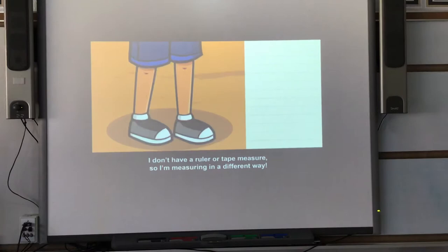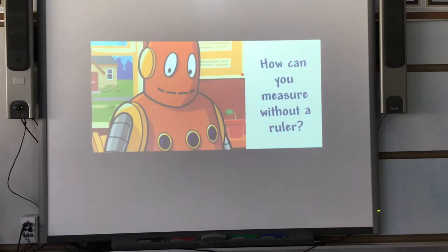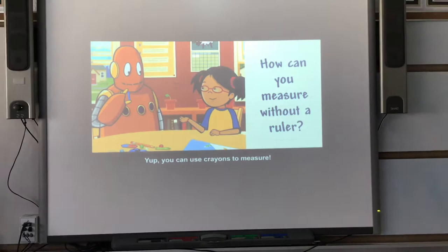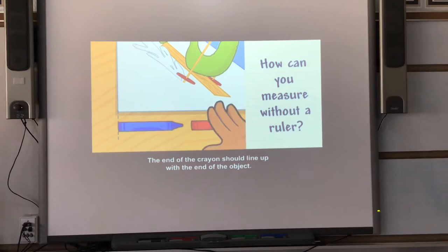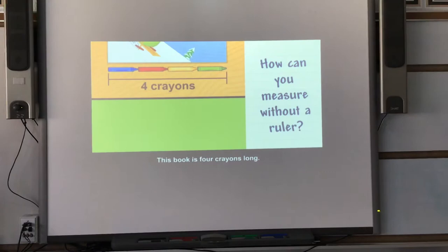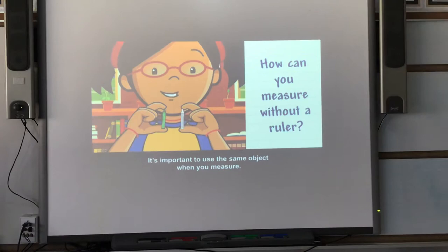How can you measure without a ruler? You can use objects around you to measure things. You can use crayons to measure — line up crayons along the object you want to measure. Make sure the crayons are straight and the same size. There shouldn't be gaps between them and they shouldn't overlap. The end of the crayon should line up with the end of the object. This book is four crayons long. If you don't line up the crayons correctly, your measurement won't be accurate. It's important to use the same object when you measure; if you use different objects, you won't get an accurate measurement.